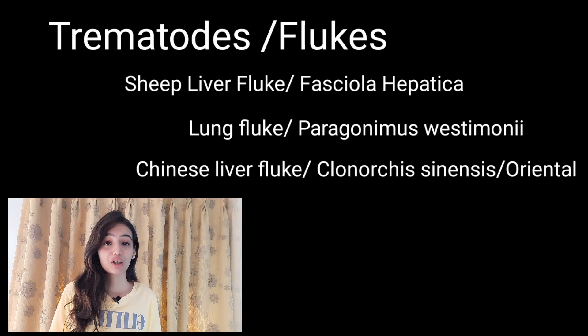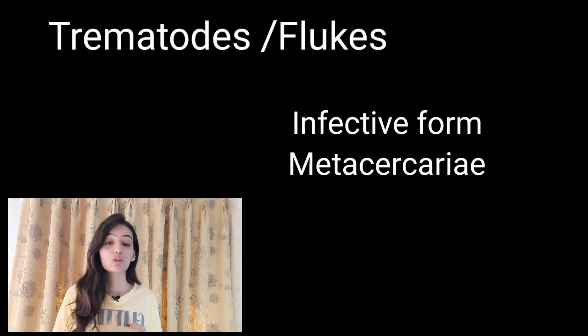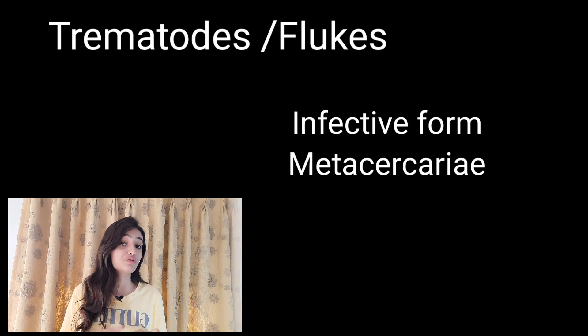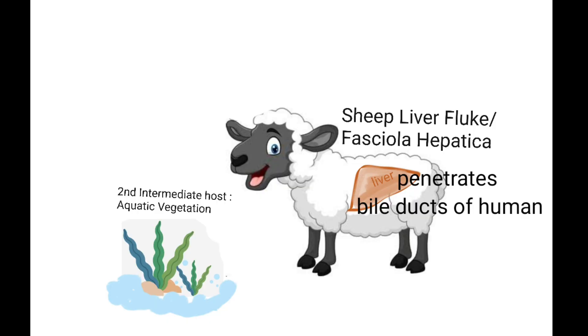How to remember flukes and trematodes: they have two intermediate hosts, and the first one is always snails. MCQs often confuse you between the second host and the site of disease, so use this picture — screenshot it and refer to it whenever you are free. I'll be talking about three flukes: sheep liver fluke, lung fluke, and Chinese liver fluke. Always remember that all these are infected in the form of metacercariae — that's an MCQ point.